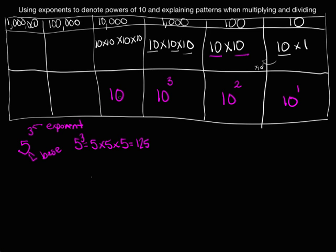Another pattern students should notice: for 10,000, counting the zeros gives 1, 2, 3, 4, so we raise 10 to the fourth power. Following the same pattern, 100,000 has five zeros, so it's 10 to the fifth power. A million would be 10 to the sixth power. We want students to see the patterns that are forming, and also be able to use this information.